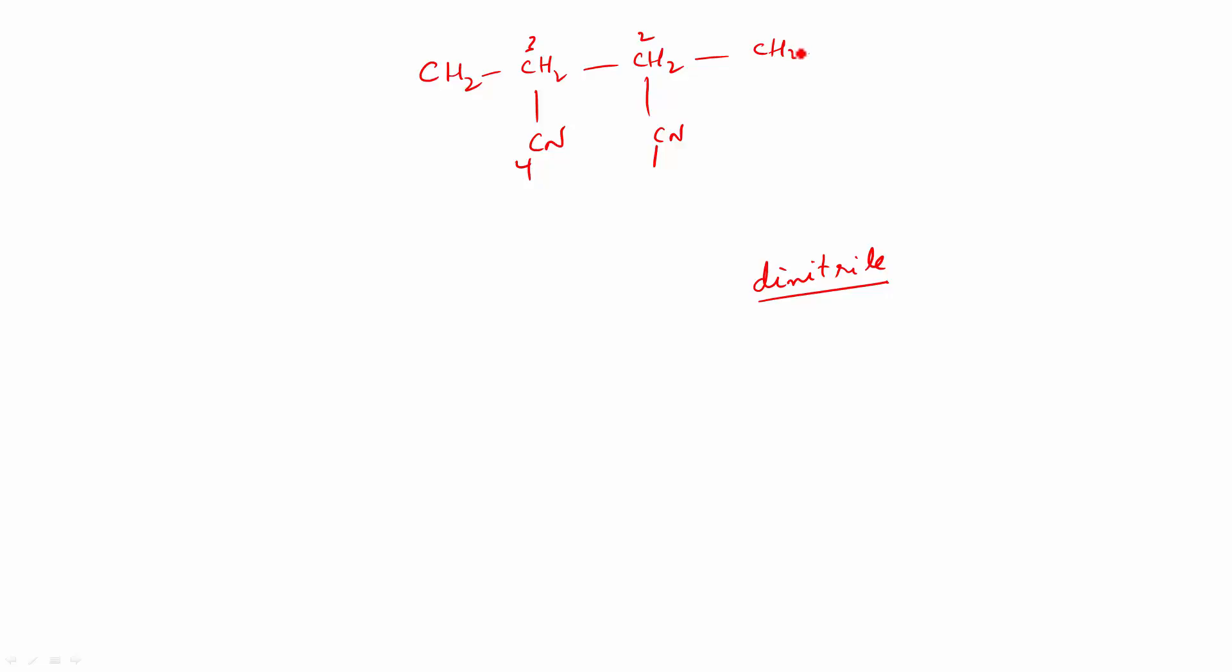But instead, sorry, this is going to be CH3, this is going to be CH3. Instead, you got to now use these as substituents. So this is going to be 2,3-dimethylbutanedinitrile without a space. That is the situation when you have two cyanide groups.